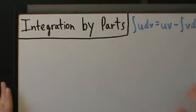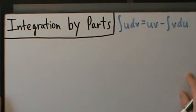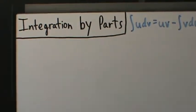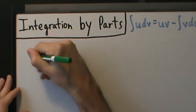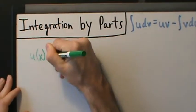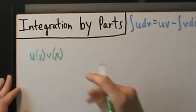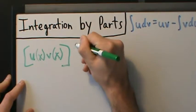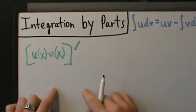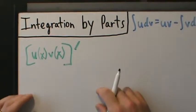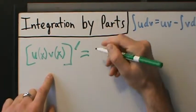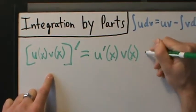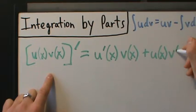You might guess that maybe it's related to the product rule for derivatives, and it sort of is — that's sort of where it comes from. So let's start with that. If we have u of x times v of x — two functions u and v being multiplied together — and we want to take a derivative, well remember what the product rule says: that's u prime of x times v of x, plus u of x times v prime of x.